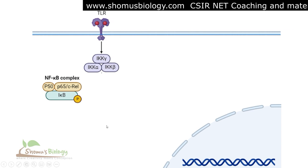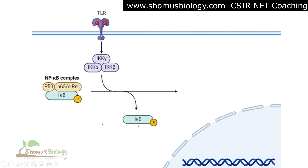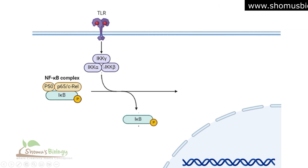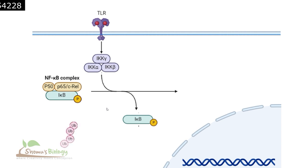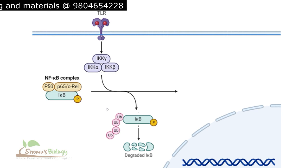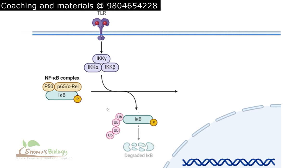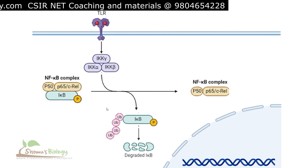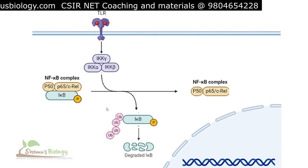To free the NF-kappa-B complex, IκB must be released. To do this, the IKK complex — IKK alpha, beta, and gamma — interacts with the NF-kappa-B complex and dissociates the phosphorylated form of IκB. At this point, the phosphorylated IκB is polyubiquitinated and degraded by the proteasome complex, freeing the P50 and P65 subunits. This P50 and P65 (C-rel) complex is the active form of NF-kappa-B.